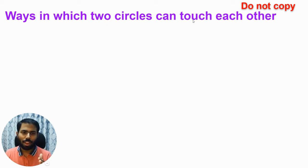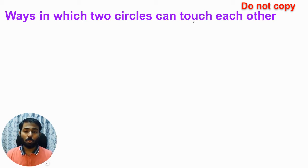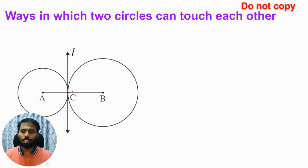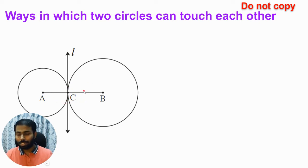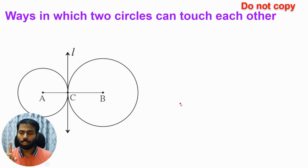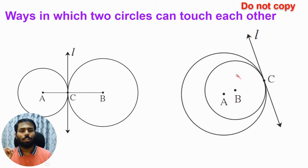I hope you paused the video and tried to see how many different ways two circles can touch each other. There are only two ways in which this can be done. The first way — the easiest — is when the two circles are touching each other externally. Both circles are outside each other, touching each other externally at point C, and you can also draw a tangent line L at point C.